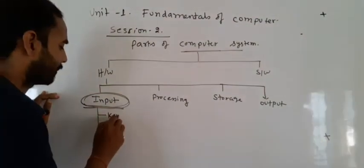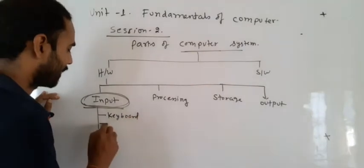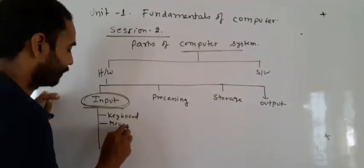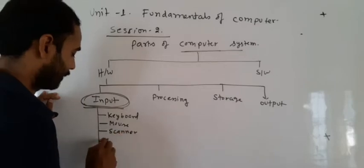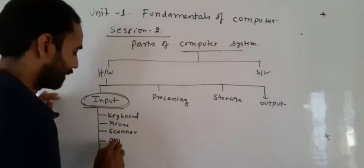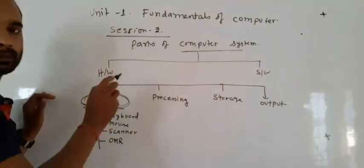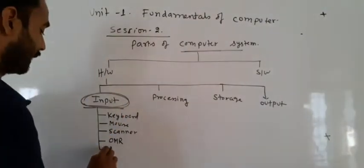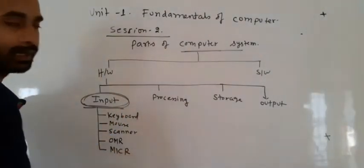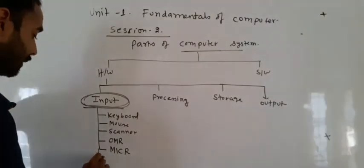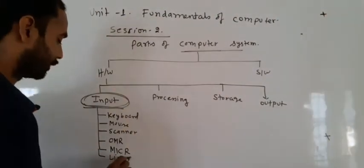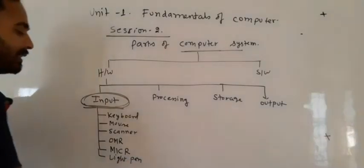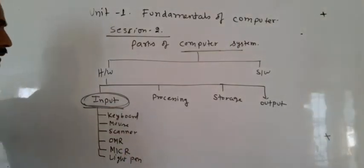First example is keyboard, mouse, scanner, computer reader, OMR (optical mark reader), MICR (magnetic ink character reader), barcode reader, light pen, joysticks, and various types of examples of input devices.